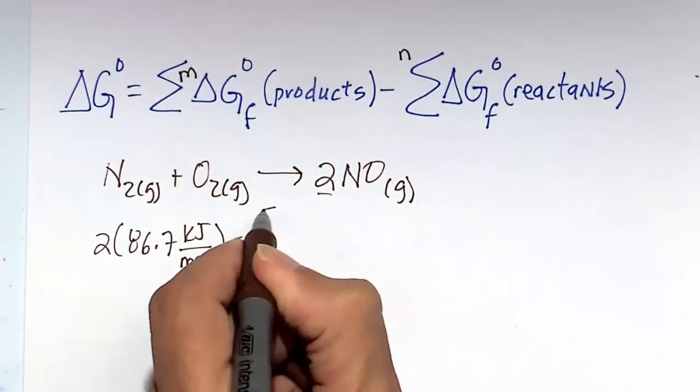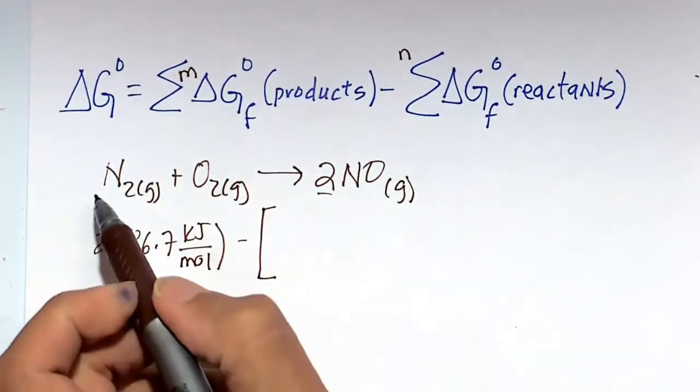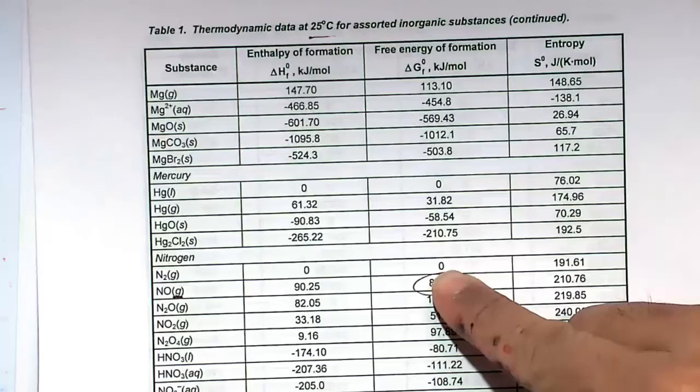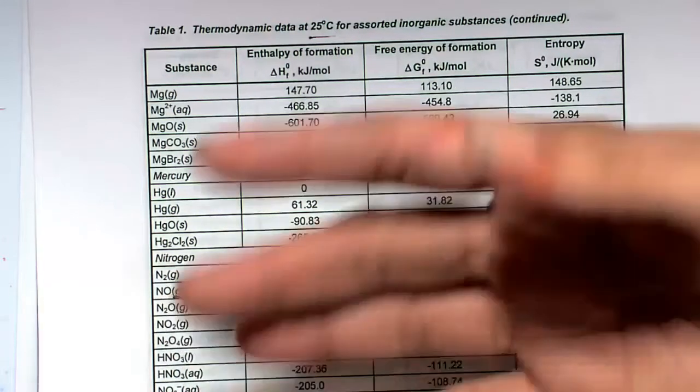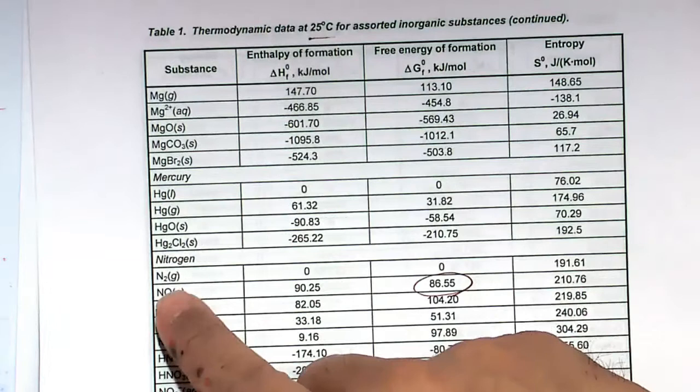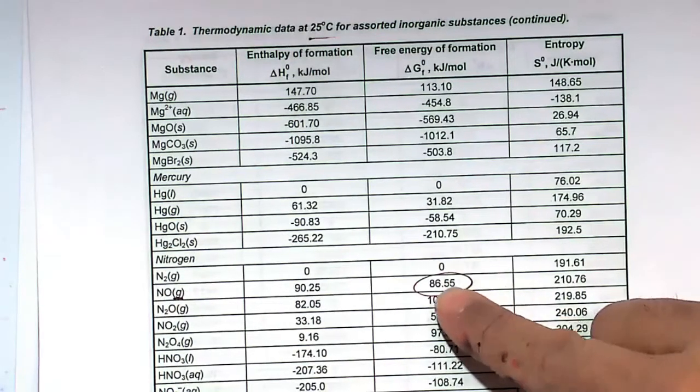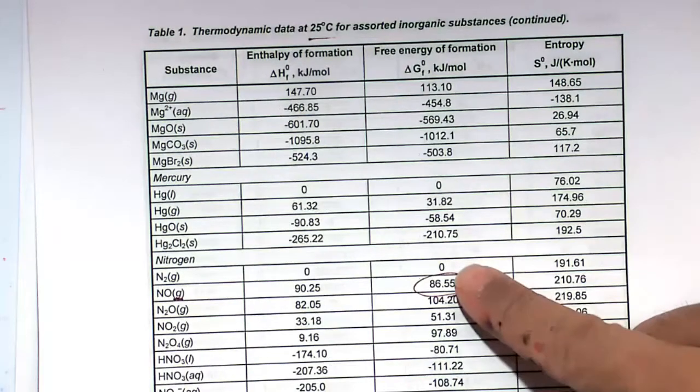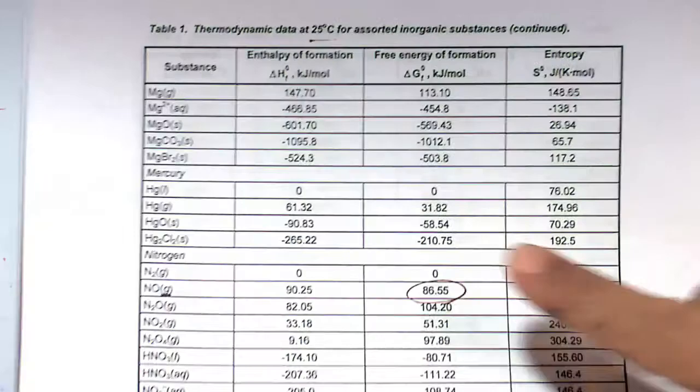So that's our products. And then minus, I'm going to put a big bracket here, our reactants. So N2 is going to be 0, because that's a naturally abundant state. So the naturally abundant state gets, by default, going to 0. That's N2 as a gas, not as a solid, not as a liquid. The most naturally abundant form. As baseline, the base compound gets 0, or you can just look it up.